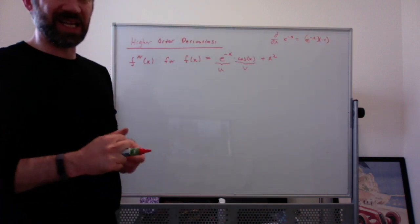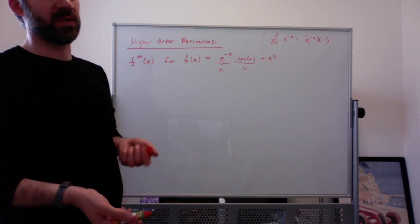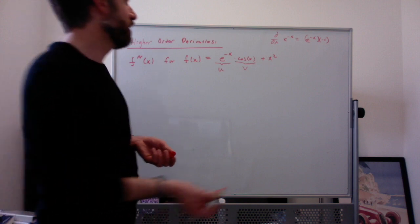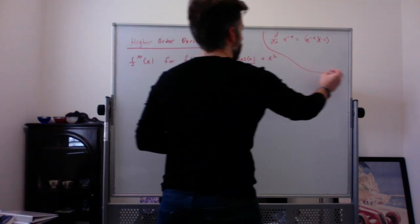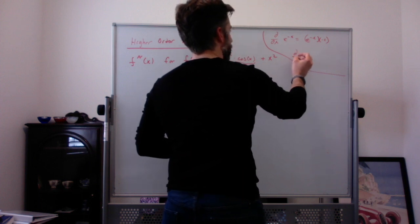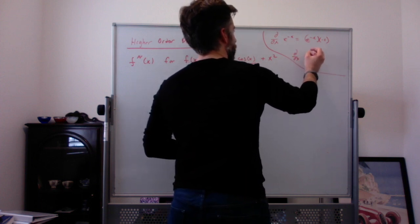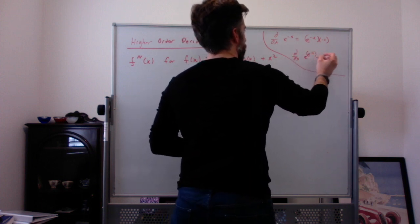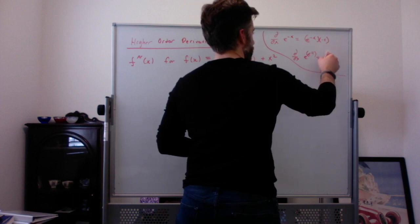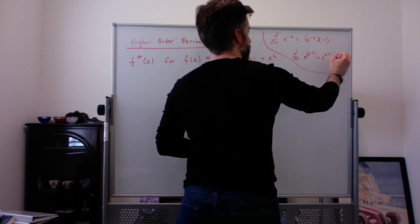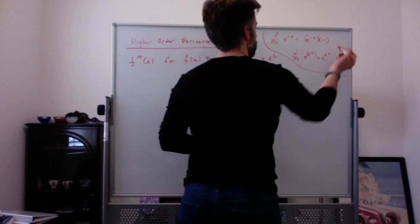The derivative of e to the stuff is e to the stuff times the derivative of the stuff. In a similar way, the derivative of e to the x to the fourth would be e to the x to the fourth times the derivative of x to the fourth, which is 4x cubed.